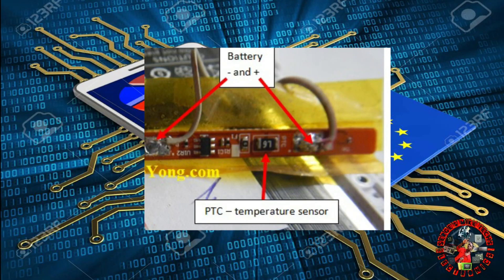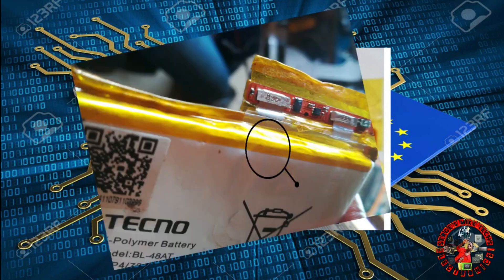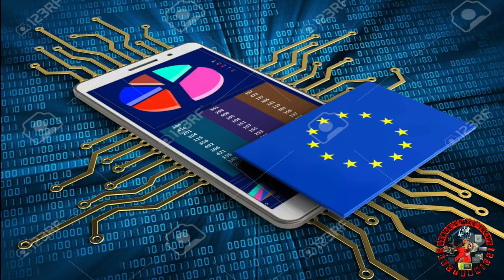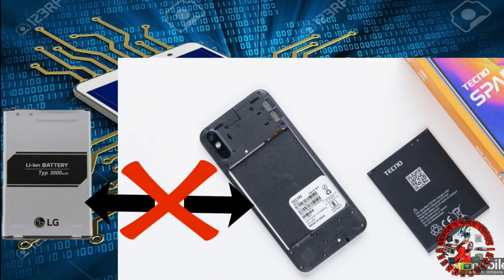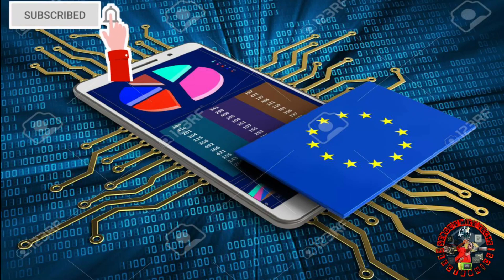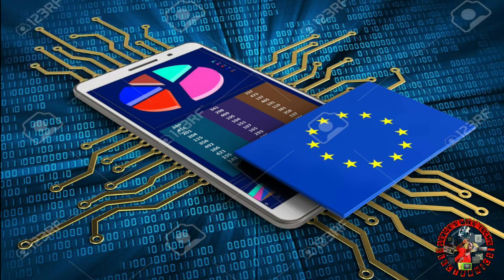The thermistor gives the temperature reading that allows the phone to identify whether the battery is compatible. However, the thermistor is not only inside the battery — this is why you can't just use any battery on a phone these days and expect it to work properly.